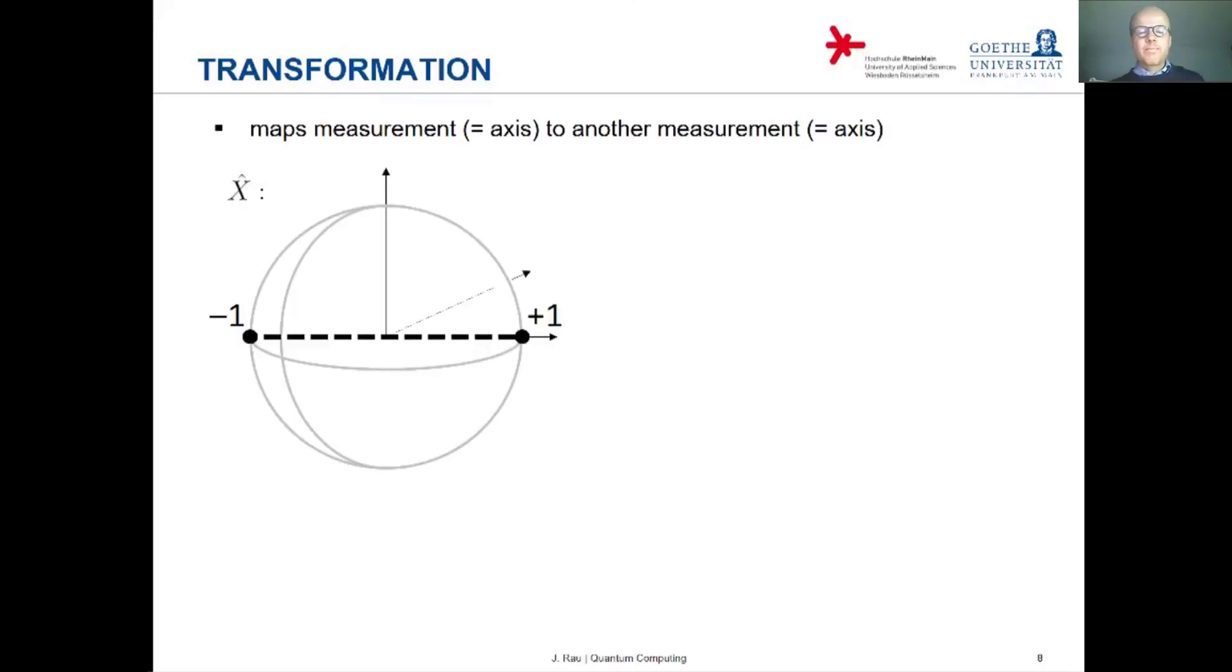So let's think of the observable Pauli x that we just discussed, which we visualize as this axis along the, it's actually not a coincidence that this goes along the x-axis of our coordinate system here. And then we can map that to, say, the axis going along the y-axis of our coordinate system, with the same measurement values attached to the ends. So this is important, you always have the same measurement values.